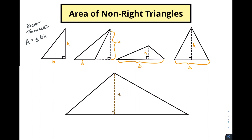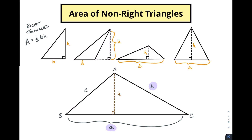The first thing we're going to do is create a height right here, call it h, and say that this is a right angle. Let's label this out: we'll call this vertex A, this one B, and this one C. Which means this is side b, this is side c, and this here is side A.